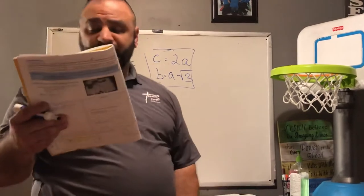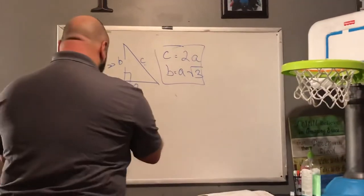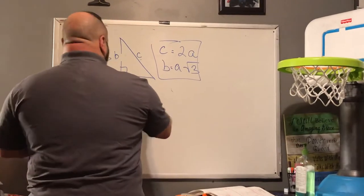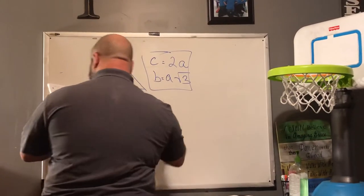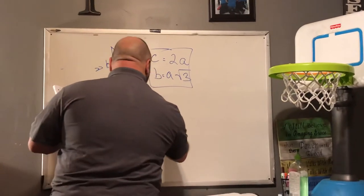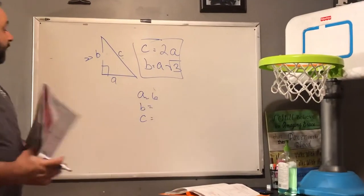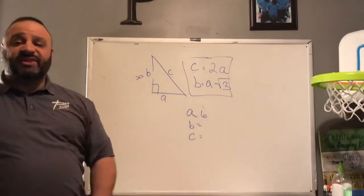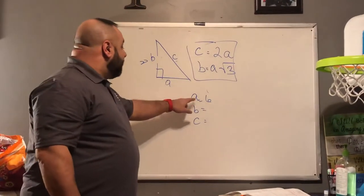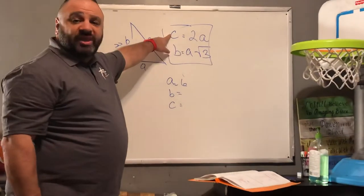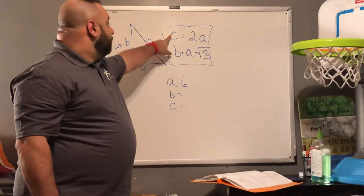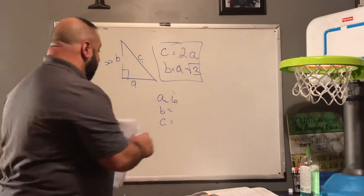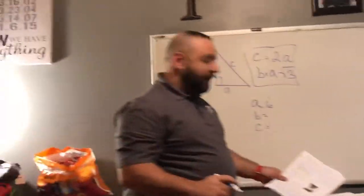Let's look at number three: A equals 6. How do I find the hypotenuse? The hypotenuse is two times the shortest leg. And then our special guest arrived with the trivia question.